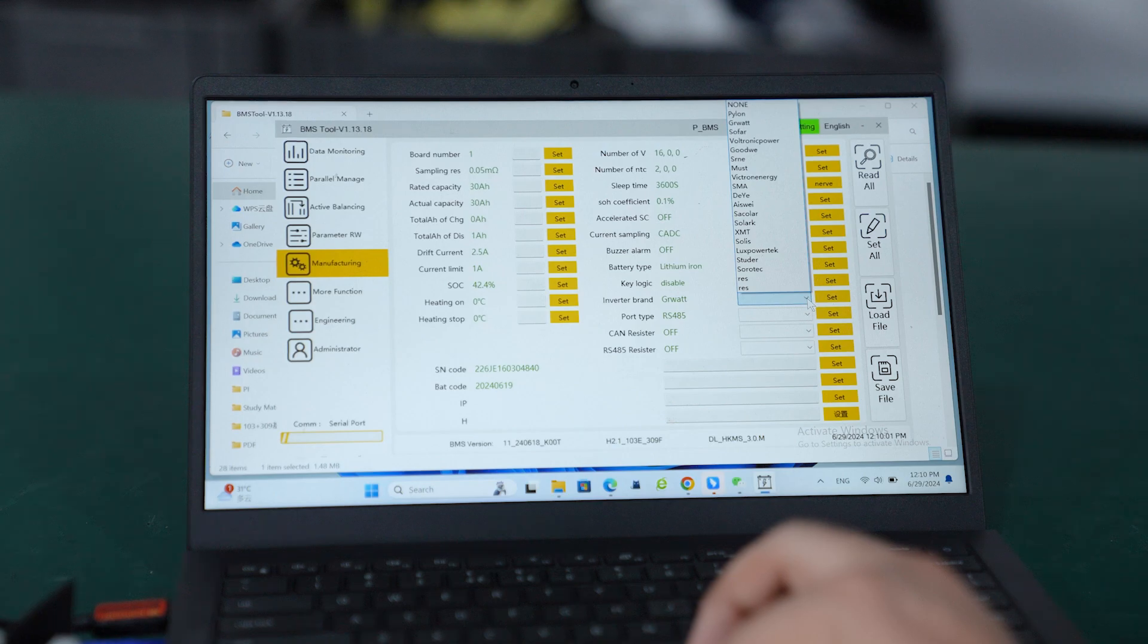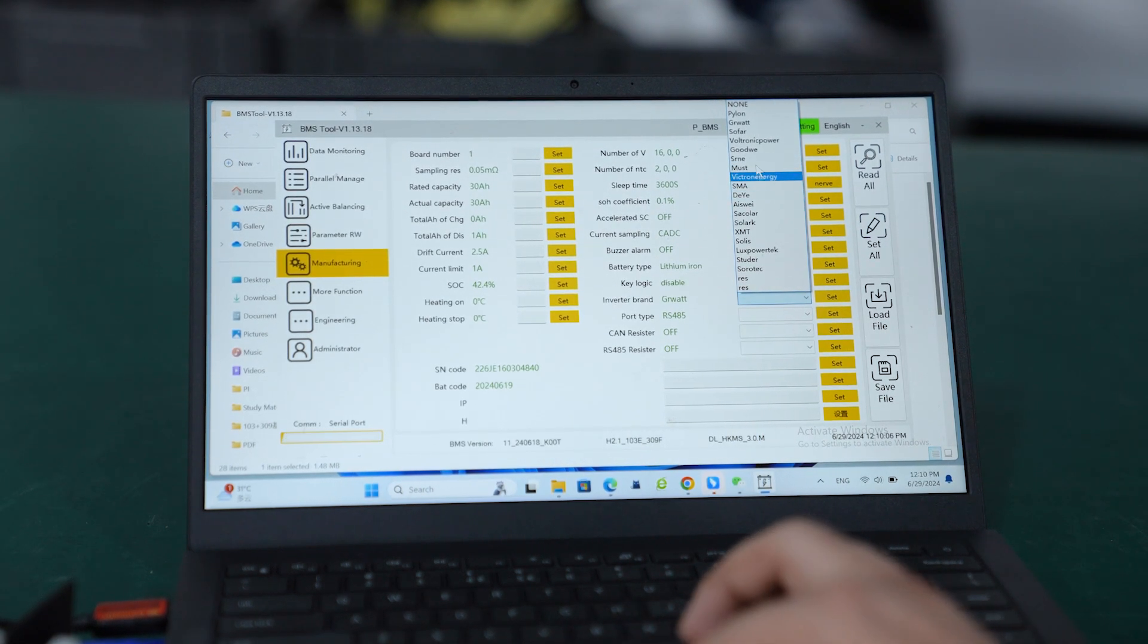Go to manufacturing here. You can see the inverter brand option with a lot of inverter brands, like the ones I showed earlier in the mobile app. You need to select Growatt here since we are connecting to Growatt.